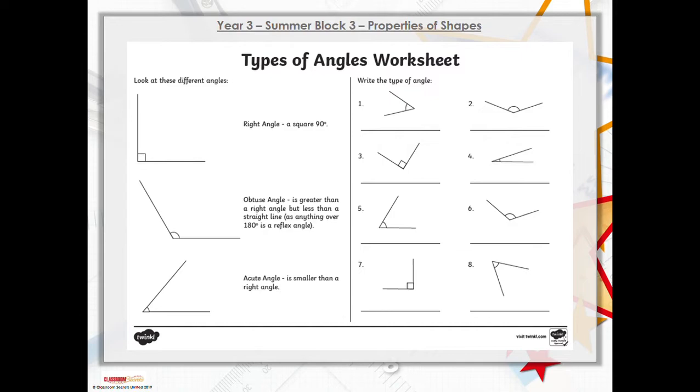label the different types of angles on the eight questions here. You can see on the left hand side where the angles have been defined: we've got right angles which we should know is 90 degrees, we've got something called an obtuse angle where the angle is greater than a right angle but less than a straight line, and we've got an acute angle which is smaller than the right angle.